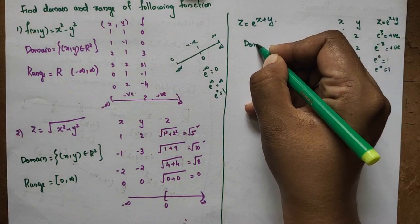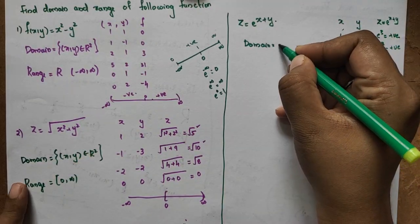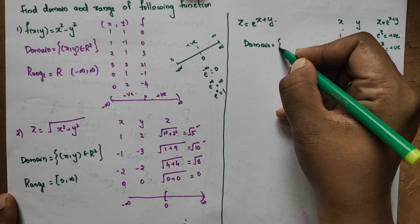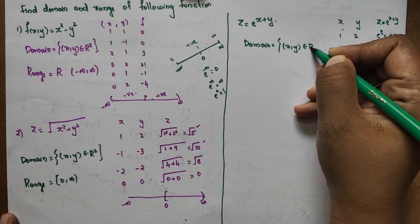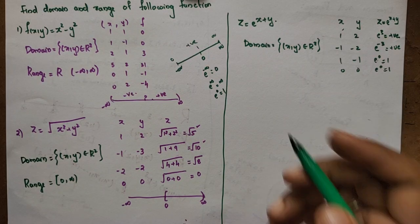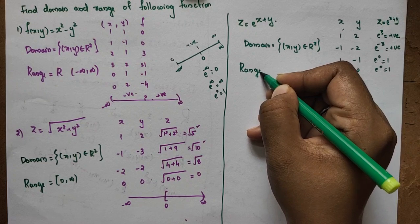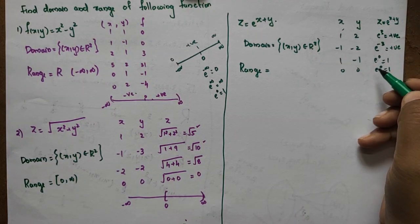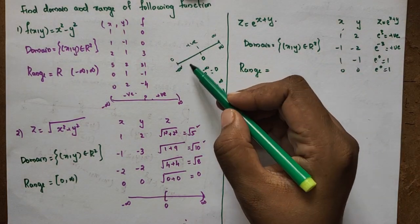The domain is all ordered pairs (x,y) belonging to R². Since there's no restriction on x and y, the domain is all of R². The range starts from 0, going to infinity, since the exponential is always positive.